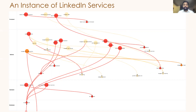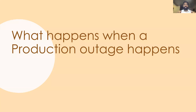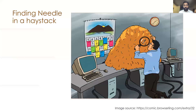Remember that this is just one instance of services interacting with each other. Our services have evolved and there are now more services, more containers, more different environments, more configurations, and so on. So what happens when there is a production outage? When LinkedIn was primarily evolving, it was mostly easy to find issues and debug manually, but now it's like finding a needle in a haystack.